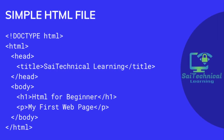Here we have a simple HTML file. Line number 1 is DOCTYPE HTML, which defines that this document is an HTML document. The second line is the HTML tag, which is the root element of an HTML page.